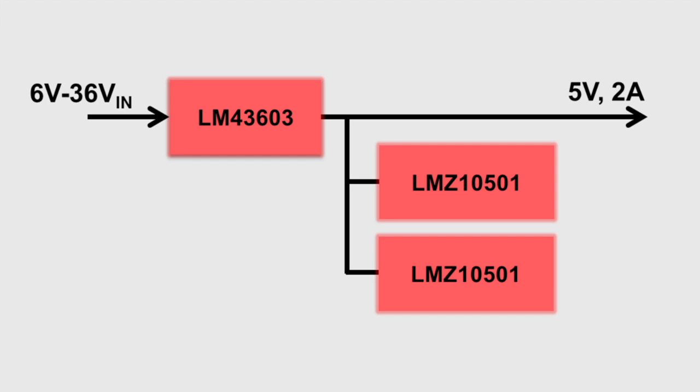The LM43603 is taking a wide input voltage of up to 36 volts and converting it down to 5 volts, and then the LMZ10501s are converting that 5 volts down to 1.8 volts and 2.5 volts, all in a very small overall solution size of 30 millimeters by 20 millimeters, enabled by the level of integration in these synchronous switchers.